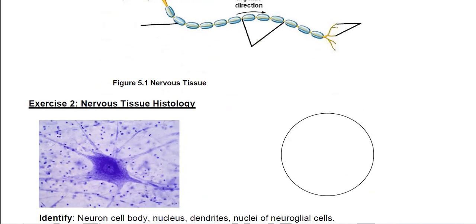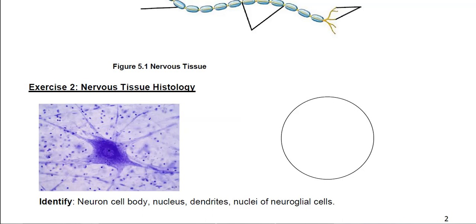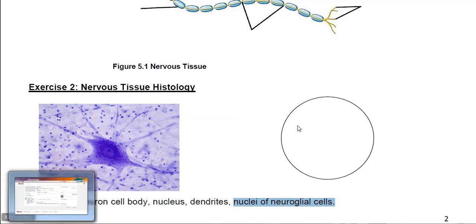Next we have a neuron slide. The dark purple cell itself is the neuron. The large center portion is the neuron cell body, and the nucleus is in the center — not as obvious here as on some other cells. The dendrites are the smaller appendages. It can be difficult to tell in the microscope what's a dendrite versus an axon. All the little purple dots that look like confetti are the nuclei of the neuroglial cells — the helper cells. They're much smaller but much more numerous than the neurons.